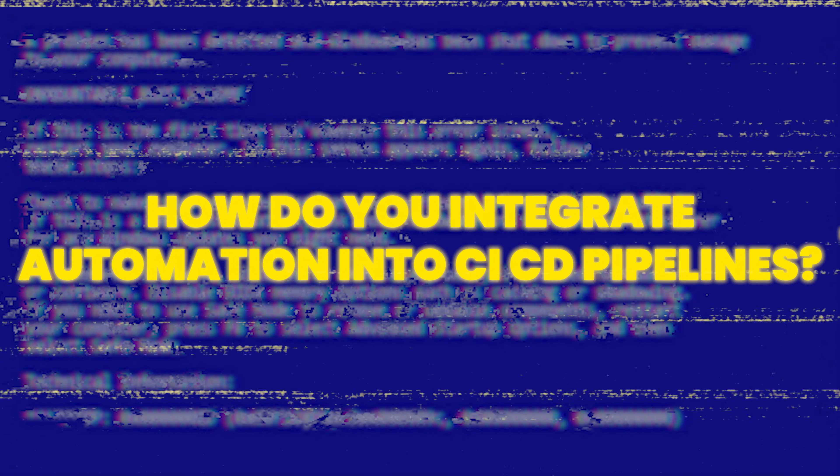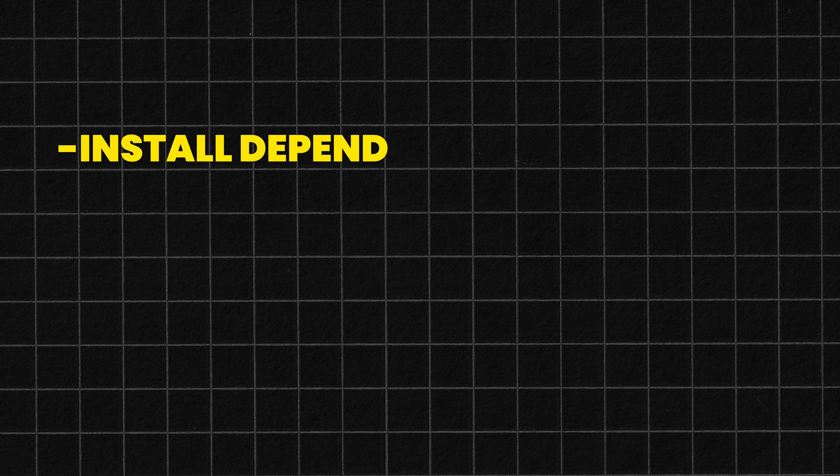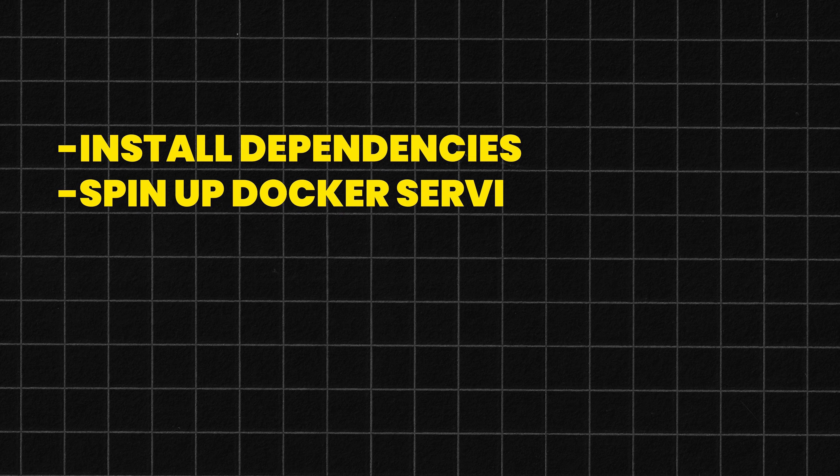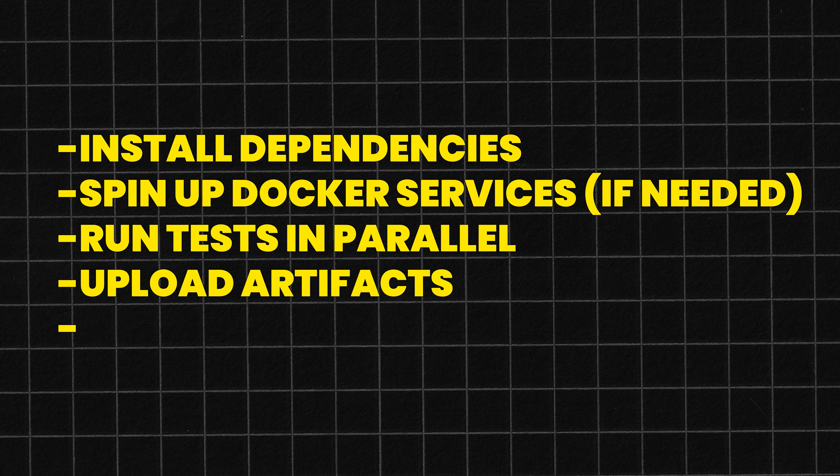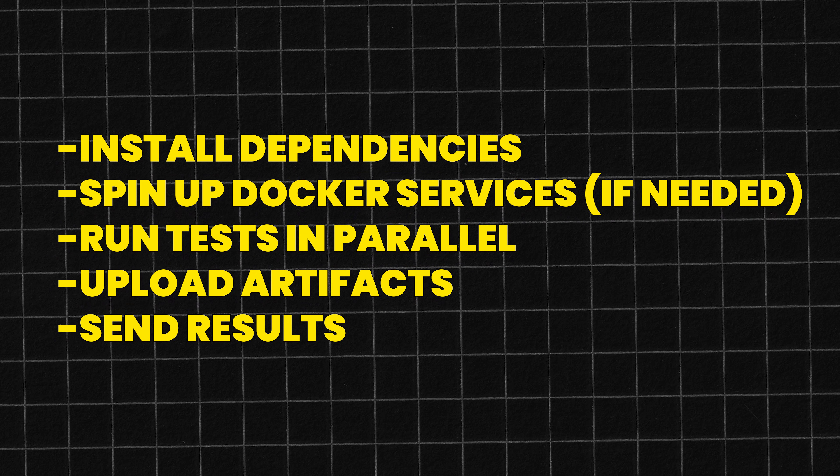This is where senior-level skills show up: how do you integrate automation into CI/CD pipelines? I usually work with GitHub Actions or Jenkins. The process is simple: install dependencies, spin up Docker services if needed, run tests in parallel, upload artifacts like videos and screenshots, and send results to Slack or email. Most pipelines are just a few steps. The key is making them consistent so tests run the same locally and in CI.